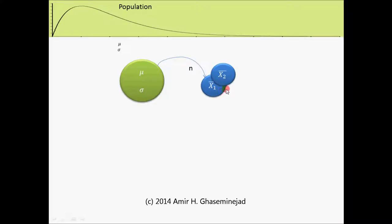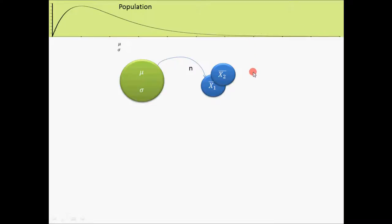Because the observations in the sample — some of them would be big, some of them would be small — and they cancel each other. The single individuals in the population can vary very much, but the average of a sample doesn't vary very much because big numbers and small numbers cancel each other.